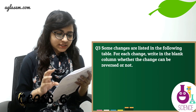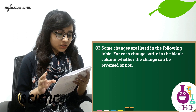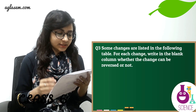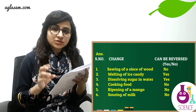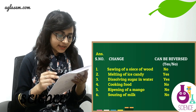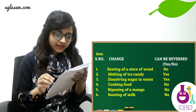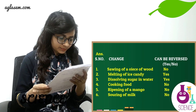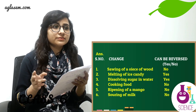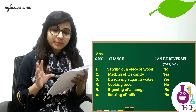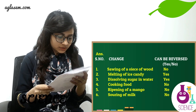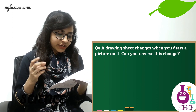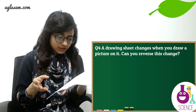Question number three: Some changes are listed in the following table. For each change, write whether the change can be reversed or not. The answers are: (1) Sawing of a piece of wood — No, cannot be reversed. (2) Melting of an ice candy — Yes, can be reversed. (3) Dissolving sugar in water — Yes, can be reversed. (4) Cooking food — No, cannot be reversed. (5) Ripening of a mango — No, cannot be reversed. (6) Souring of milk — No, cannot be reversed.